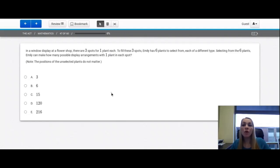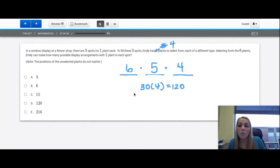Question number 47. In a window display at a flower shop, there are three spots for one plant each. To fill these three spots, Emily has six plants to select from, each of a different type. Selecting from the six plants, Emily can make how many possible display arrangements with one plant in each spot. Note, the position of the unselected plants do not matter. Let's make three spots for the flower arrangements. One, two, three. There are six plants to choose from for the first one. And let's say that we put one there. So now we only have five to choose from. So we can pick one of the five plants to go here. Now we only have four plants to choose from. So we can pick one of those four plants to put here. If we multiply these all together, we're going to get our total number of choices. So six times five times four. Six times five is 30 times four is 120 choices, which is option D.